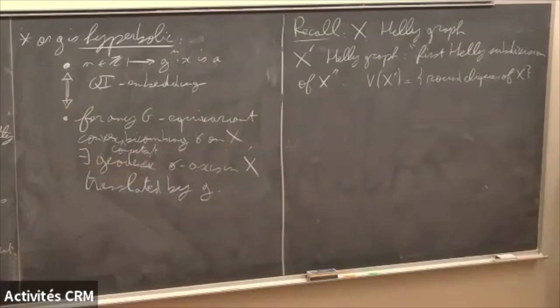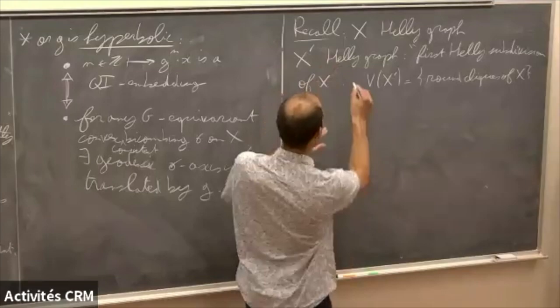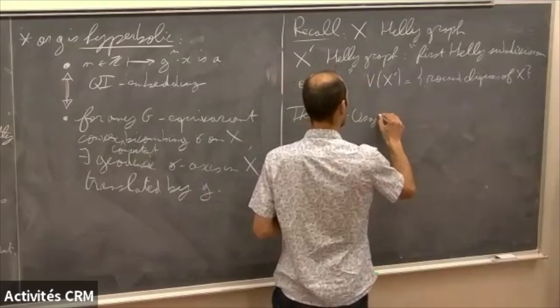Why do we need to look at this? Even in the case of CAT(0) cube complexes, any isometry of the CAT(0) cube complex may not fix a vertex, but up to passing to the first cubical subdivision it will fix a vertex. We have a similar result for heli graphs: we need to pass to a subdivision to have a nicer result.